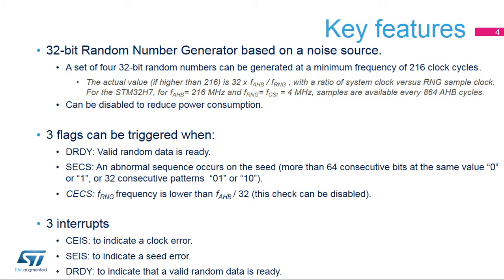The RNG peripheral is based on continuous analog noise that provides a random 32-bit value, which will be explained in detail later on. The RNG is able to generate four 32-bit random numbers at a minimum frequency of 216 system clock cycles.